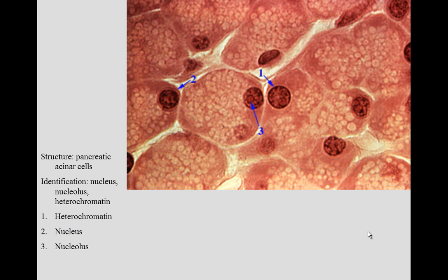Here you can see one of those cells. Here we see number three - there's a nucleolus and here is a nucleus. Another one of those cells showing the spherical nucleus, dark staining heterochromatin and light staining euchromatin.